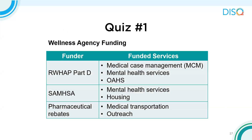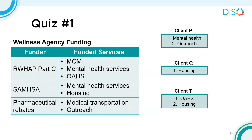So let's see how well you understand how to determine which clients should be included in the RSR with our first quiz. The Wellness Agency receives Part D funding for medical case management, mental health services, and OHS. They also receive SAMHSA funding for mental health services and housing services, and use funds from pharmaceutical rebates for medical transportation and outreach. Assuming clients P, Q, and T all meet the agency's eligibility requirements, please select which of the following services should be reported for each client.